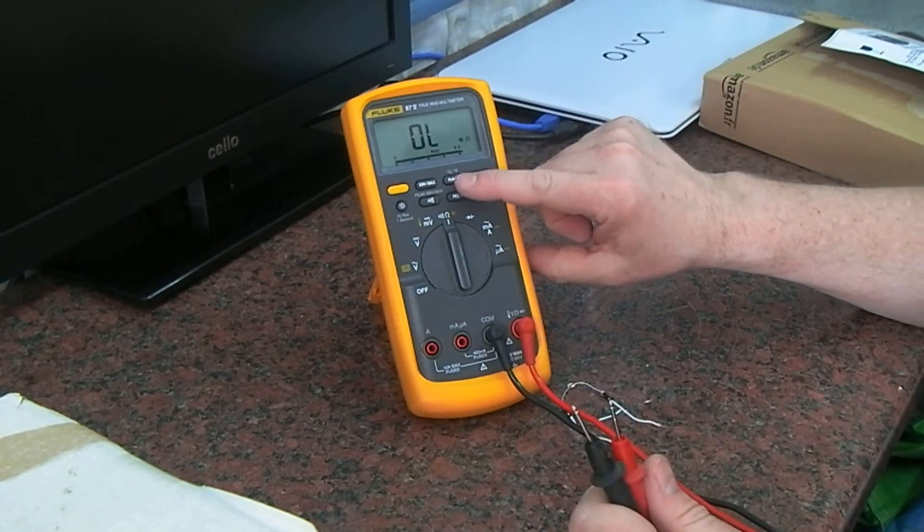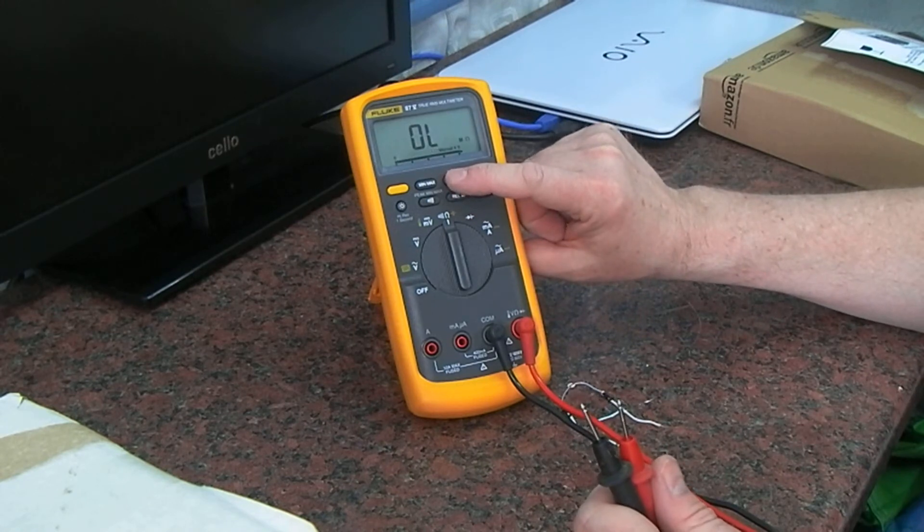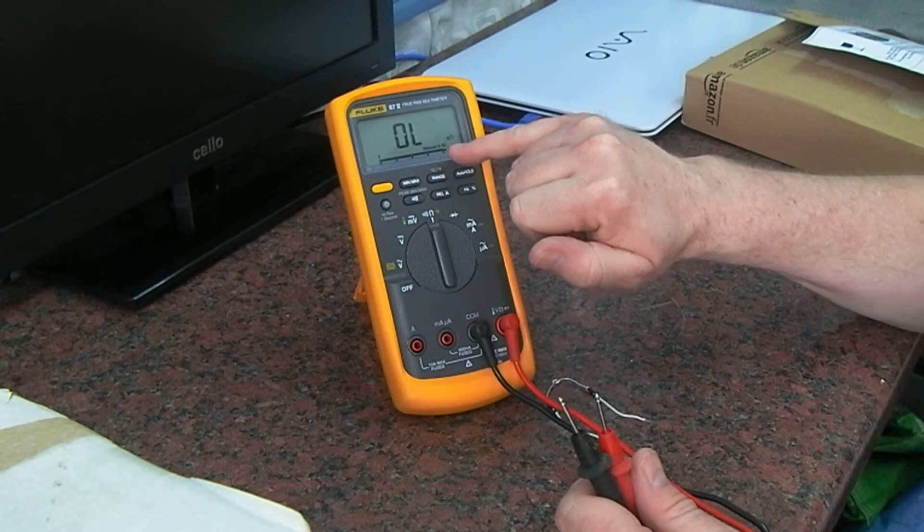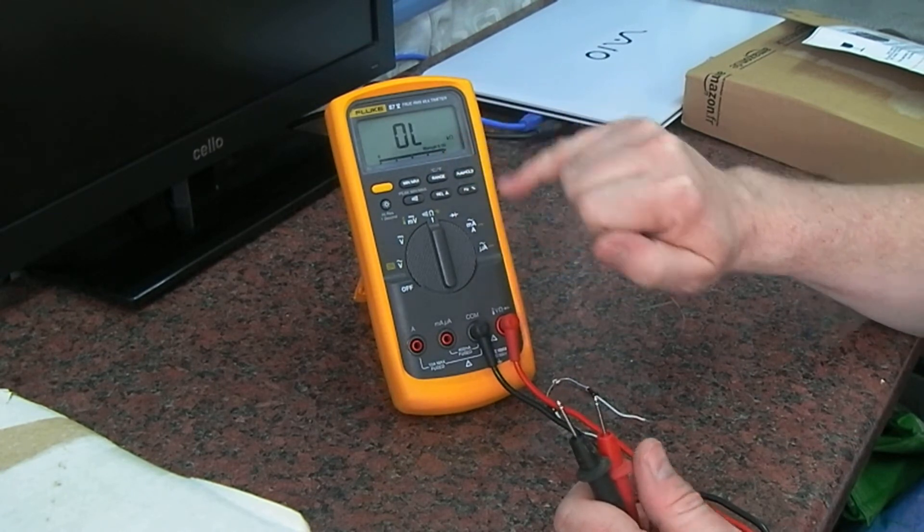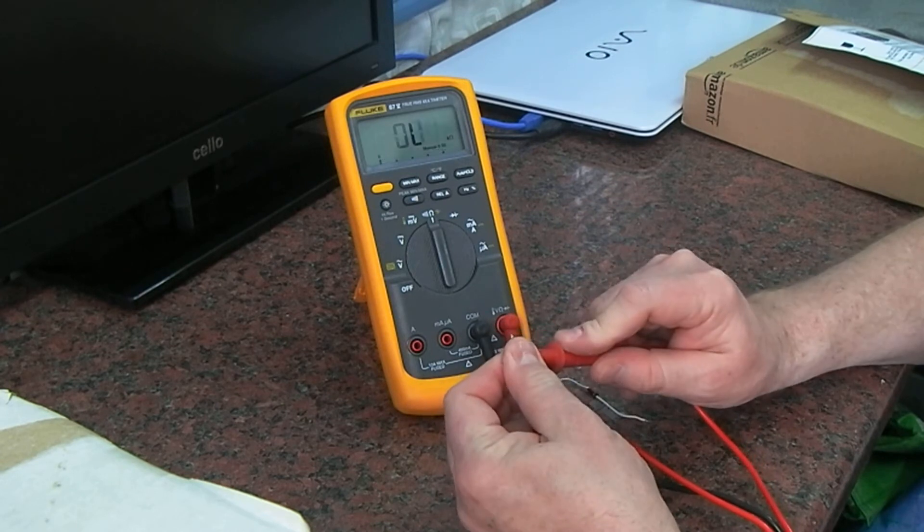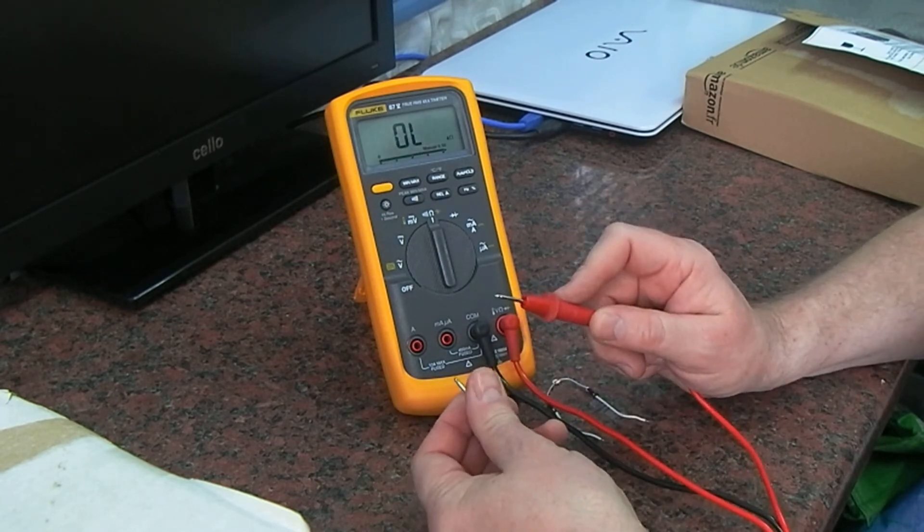But if you take it out of auto-ranging using the range button and just go down to the kilohm scale, so it says manual 6.00 kilohms, you can actually get this to react much quicker. That is probably equal or faster than the Wavetech now.